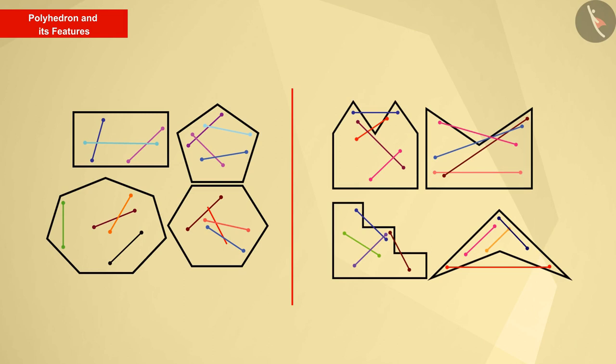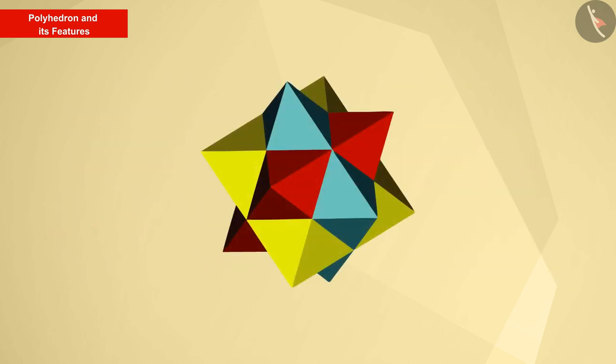Now let's learn about different types of polyhedrons. Do you remember convex and concave polygons? Based on this, can you tell whether the figure shown is a convex polyhedron or a concave polyhedron? Perfect. Since the line segments connecting any points inside this shape may also be outside the shape, therefore it is a concave polyhedron.